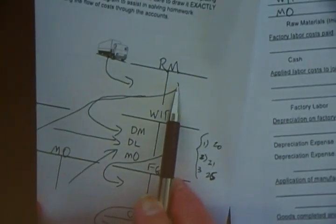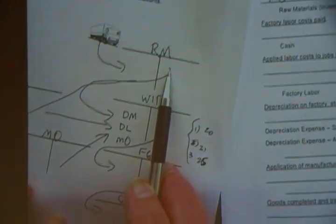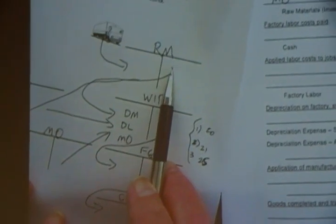Credit raw materials for the total. Debit work in process. Debit manufacturing overhead.